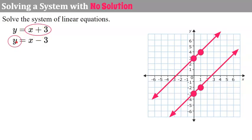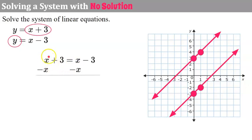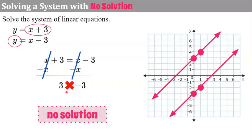I replace y in the second equation with the expression x plus 3, which gives me x plus 3 equals x minus 3. I collect variable terms to the left and subtract x from both sides — both x terms cancel as zero pairs. I'm left with positive 3 equals negative 3, which is a false statement. That's how we know there is no solution. When the variable term is eliminated and you're left with a false statement, there is no solution. When you graph it, the lines are parallel.